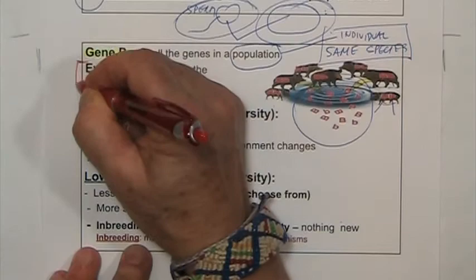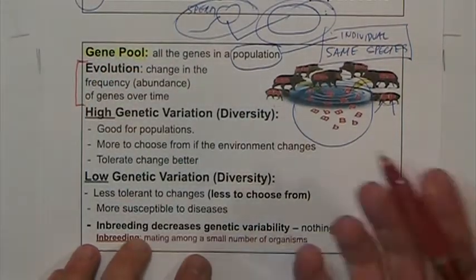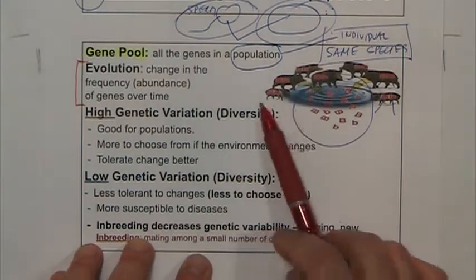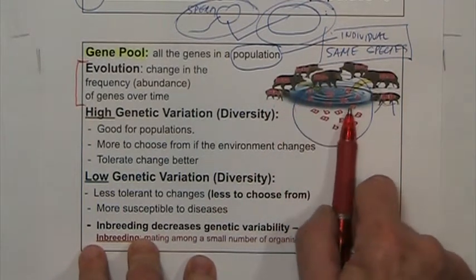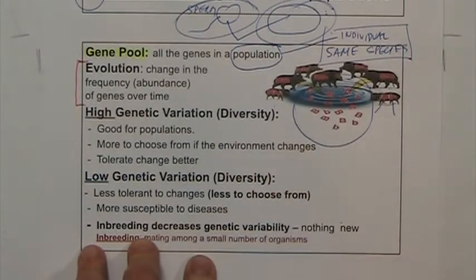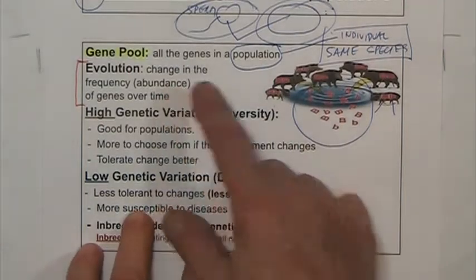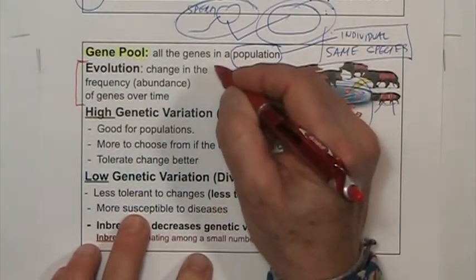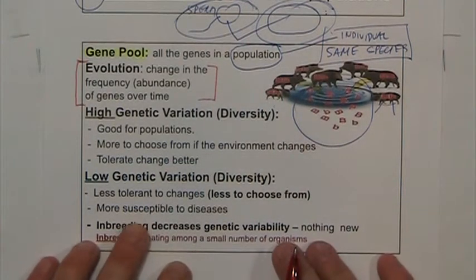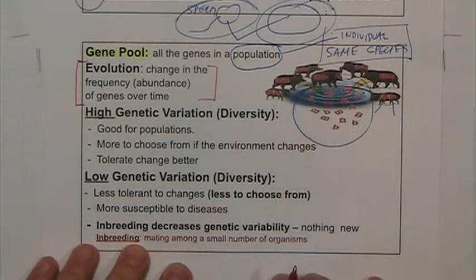In evolution, one of the things that happens — remember change over time — is sometimes just the change of frequencies. At some point, maybe the dominant trait is more common. At a different point, the recessive trait is more common, depending on the environmental conditions. So changing the abundance of particular genes and traits is a way of evolution.